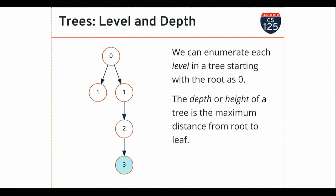In the Java class hierarchy, the root node is Object, and the nodes below it are other Java classes. As we go up the tree we lose capabilities but gain generality. The Java compiler internally maintains a tree data structure representing the class hierarchy, and when it looks for a method it starts at the class you called the method on and walks up the tree looking for a matching type signature.